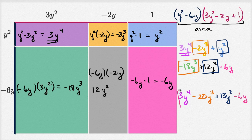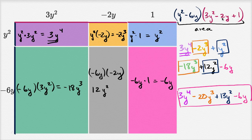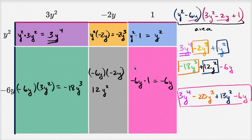And there you have it — another expression for the area of the entire rectangle. The whole point is to realize that the two expressions are equivalent, and the way we multiply corresponds exactly to how we found the areas of the smaller rectangles. Y squared times 3y squared is 3y to the fourth; y squared times negative 2y is negative 2y to the third; y squared times one is y squared — exactly the top row. Then negative 6y times 3y squared is negative 18y to the third; negative 6y times negative 2y is positive 12y squared; negative 6y times one is negative 6y. This isn't voodoo — it completely makes sense when you think about it in terms of an area model.